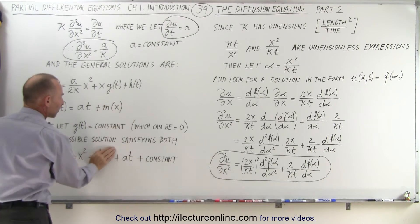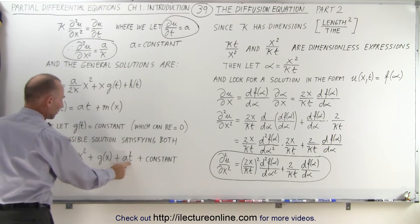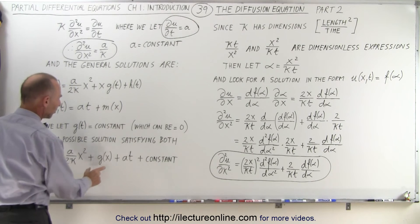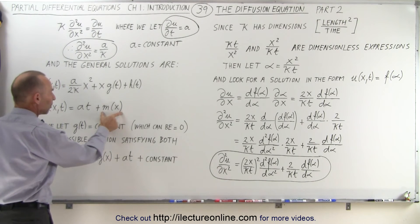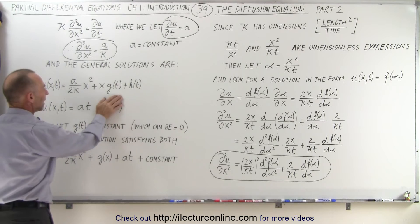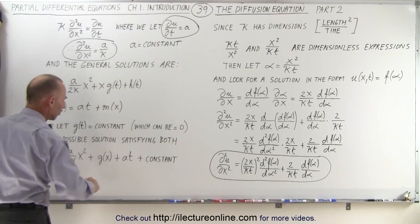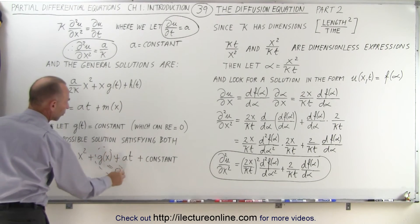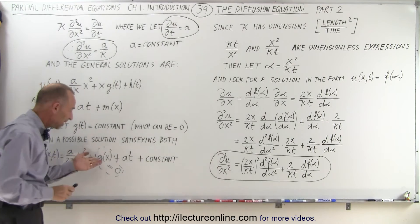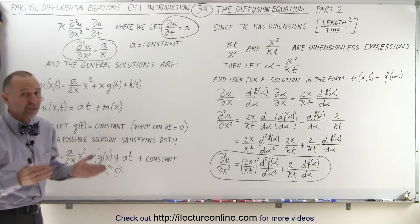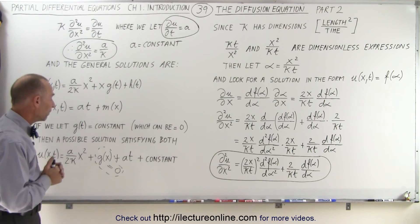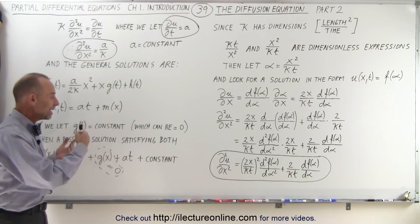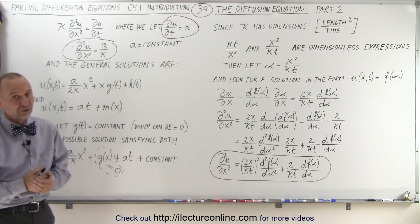If we let g(x) go to zero — meaning it's a function whose first and second derivatives disappear — then we have a general solution that satisfies both equations. So essentially we want g(x) to be such that taking its first and second derivatives causes it to vanish. If we allow that, we don't have to worry about it, and we're fine. At least we now have something to start with, and we're going to use that to find the solution to this particular partial differential equation.